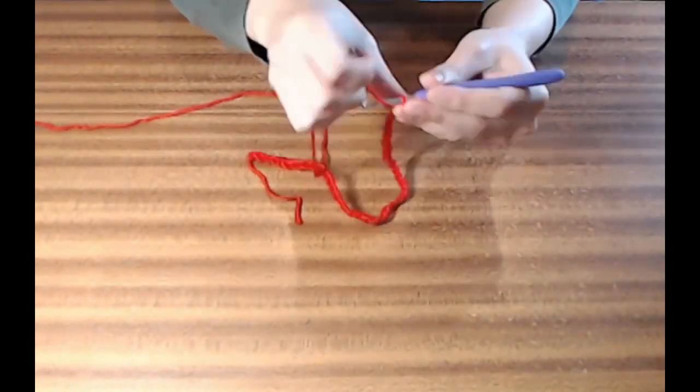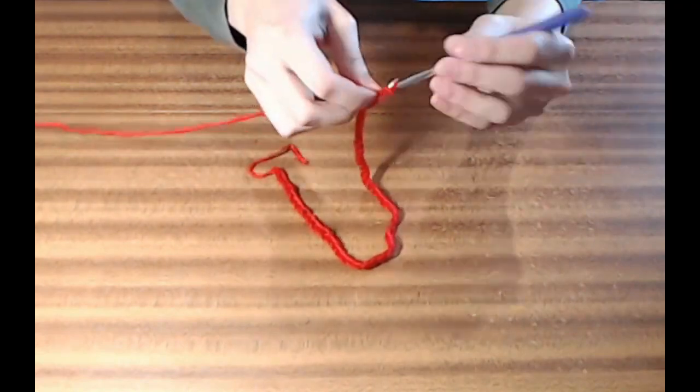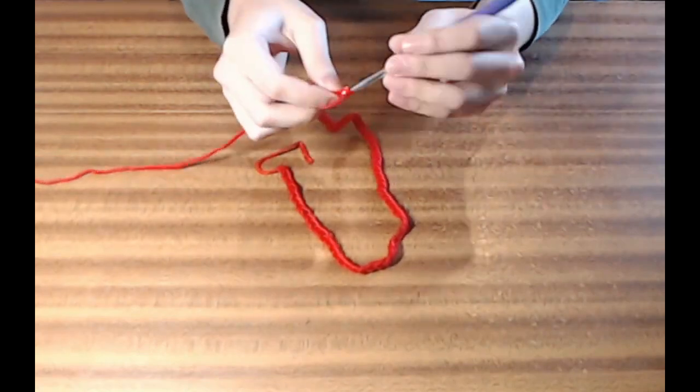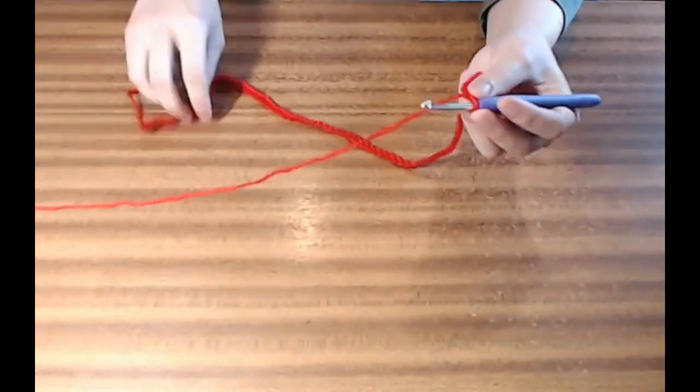Normally, a Mobius strip would be made by taking a rectangular strip, twisting one end by a half twist, and then joining the end back together, but we'll be twisting by three half twists.